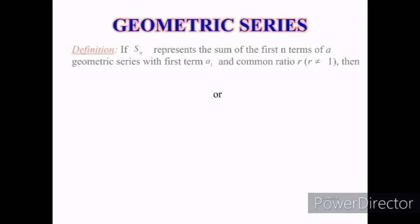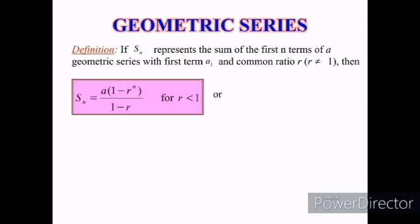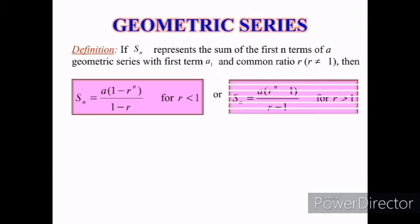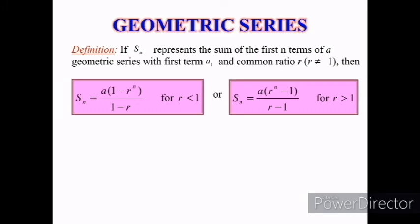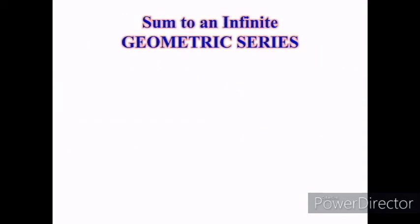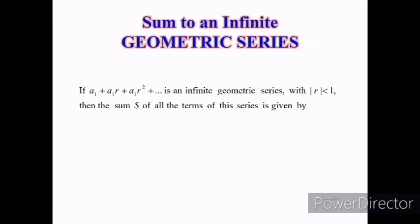Now, we will look further at geometric series. The sum of the first n terms S(n) of a geometric series with first term a and common ratio r (where r ≠ 1) gives two formulas: for r < 1, S(n) = a(1 − r^n) / (1 − r); for r > 1, S(n) = a(r^n − 1) / (r − 1). The relationship between t(n) and S(n) is given by t(n) = S(n) − S(n−1). For the sum of an infinite geometric series, with the condition that |r| < 1, the sum S of all terms is given by S = a / (1 − r).